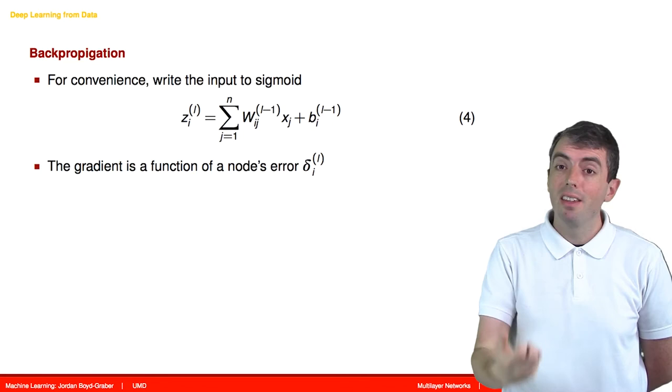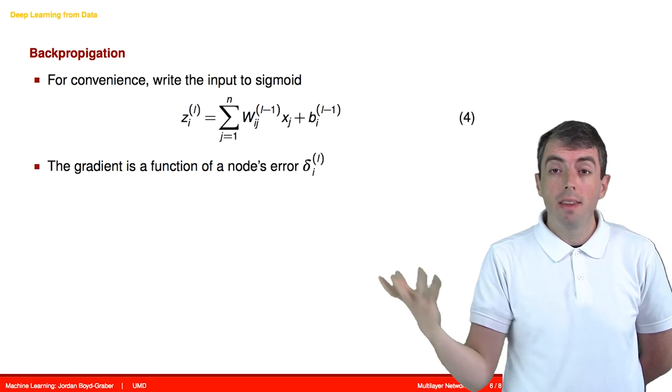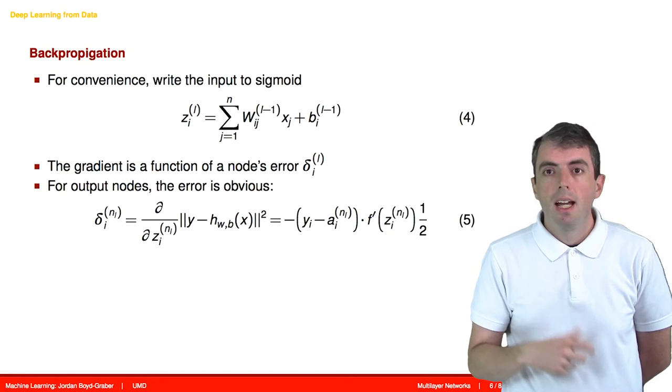The gradient is a function, quite naturally, of the error that every node is making. And for the output node, it's very straightforward to figure out what the error is.